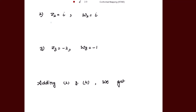Next, putting z2=i and w2=i. We get: i = (ai+b)/(ci+d). From here, cross-multiplying gives: ai + b + c - di = 0, because i² = -1, so ci² becomes -c, which moves to the other side as positive c. Let's name this equation 3.